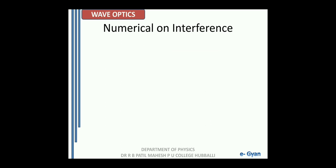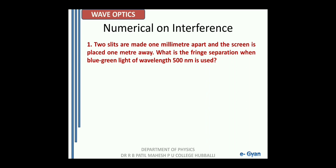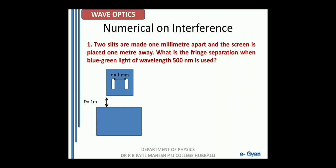Let us move to the next numerical on interference. Two slits are made 1 millimeter apart and the screen is placed 1 meter away. What is the fringe separation when blue-green light of wavelength 500 nanometer is used? We have two slits at a distance of 1 millimeter from each other, and a screen placed at a distance of 1 meter from the slits. The light of wavelength 500 nanometer falls on the screen, producing an interference pattern. We are asked to find the fringe separation.